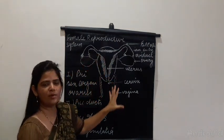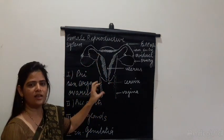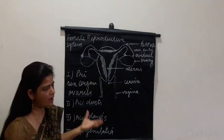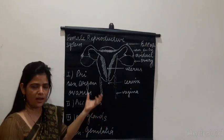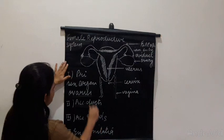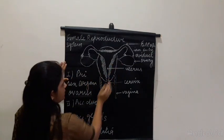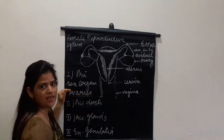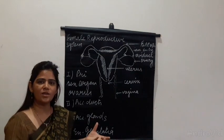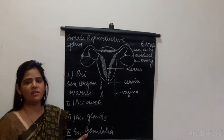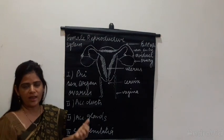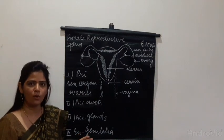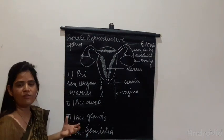So the female reproductive system looks somewhat like this. Let us discuss one by one about their labellings. You can see the right and left ovaries here. Ovaries are the primary sex organ because they are responsible for gametogenesis — here we will talk about oogenesis, that means the formation of egg or ovum. So the ovaries will form the egg.